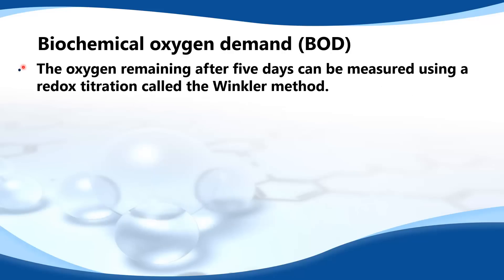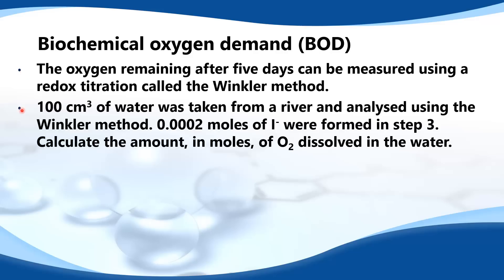The oxygen remaining after 5 days can be measured using a redox titration called the Winkler method. For example, 100 cm³ of water was taken from a river and analyzed using the Winkler method. 0.0002 moles of the iodide ion I⁻ were formed in step 3.